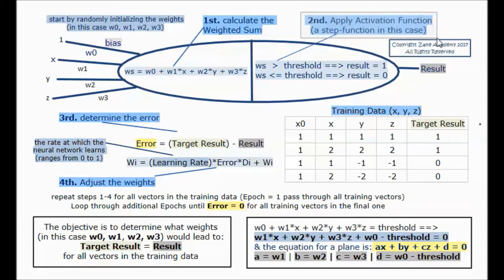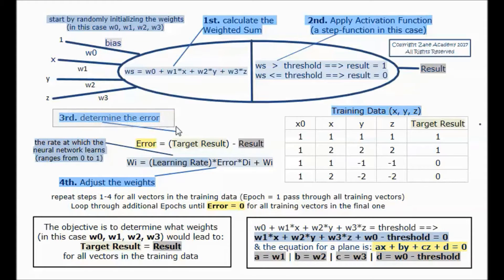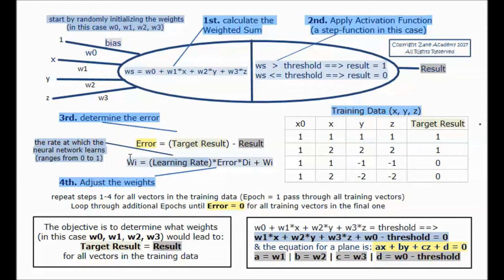Second, we apply an activation function — in this case a step function. If ws is bigger than the threshold of the step function, the result will be 1, and it will be 0 otherwise. Third, we determine the error, which is the target result minus the result.